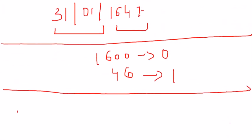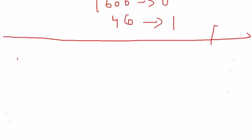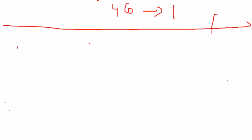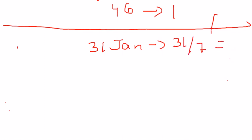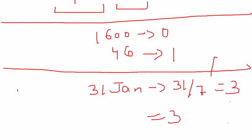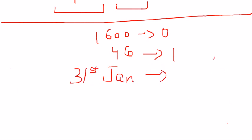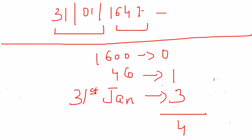The remaining part is the month and day part. The date is 31st January 1647, so January is the only month and we have 31 days. 31 divided by 7 gives remainder 3, so the month and day part has 3 odd days. In total: 0 (1600 years) + 1 (46 years) + 3 (month and day) = 4 odd days. That simply means the day is Thursday. You can verify this from your calendars — the day is Thursday.